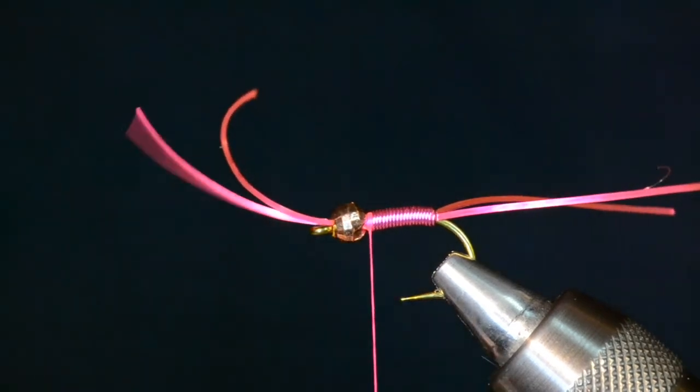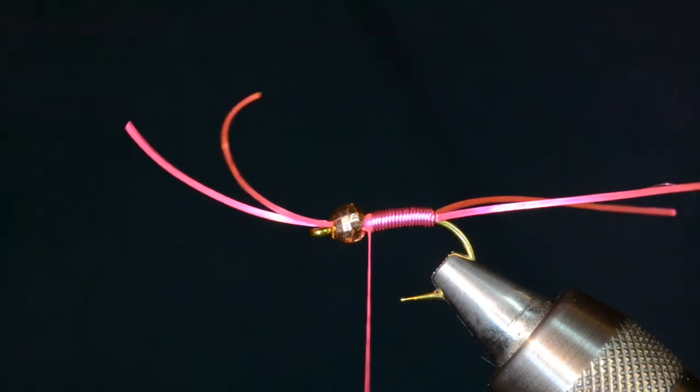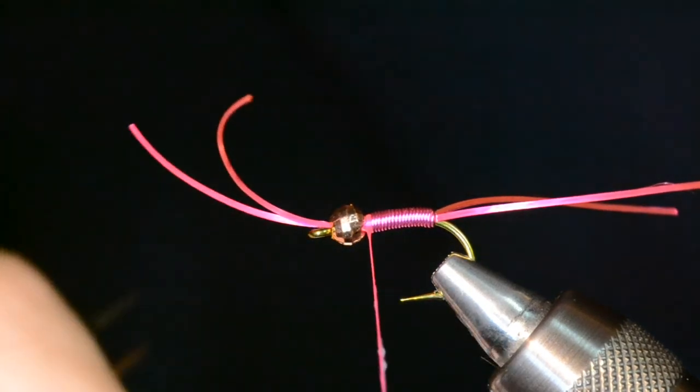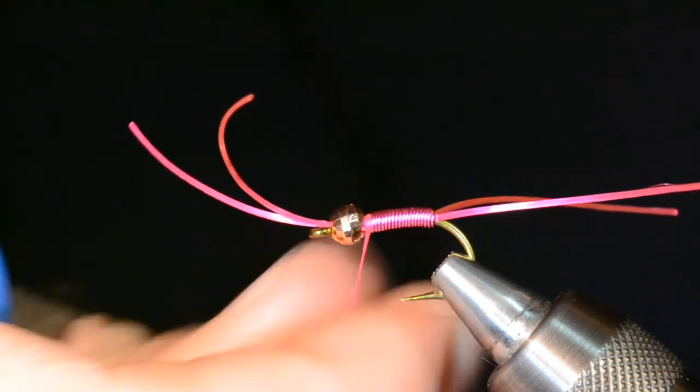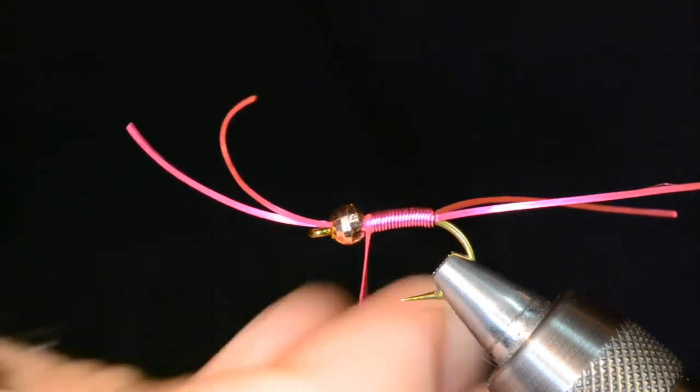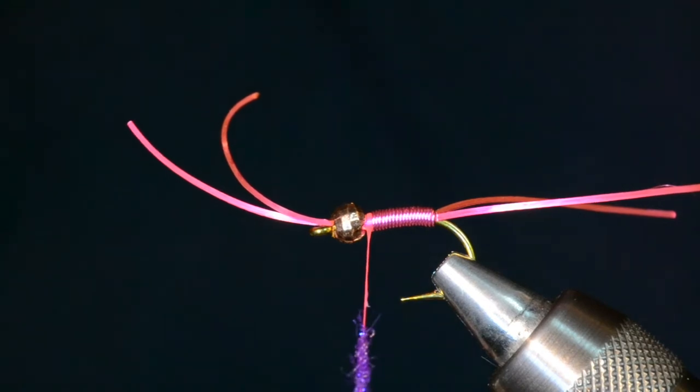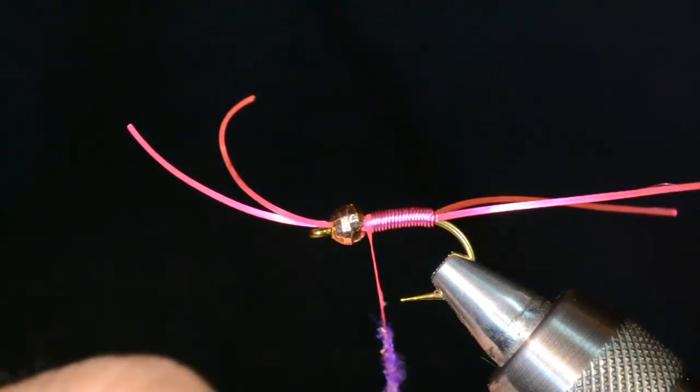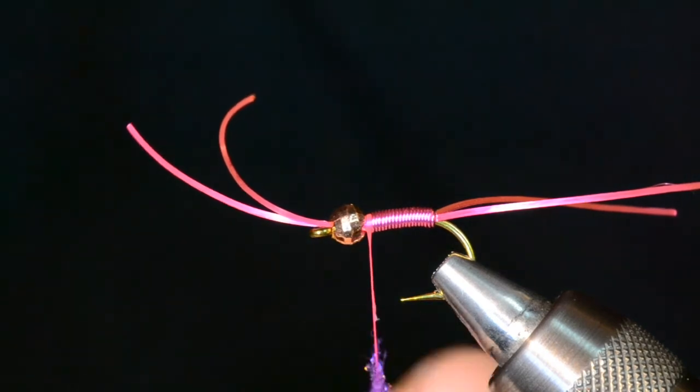Last little step here is this purple ice dub. I like this stuff for this fly. A little purple on the hot pink fly gives a nice contrast, just a little collar there to kind of finish the fly off. Less is more with dubbing in my opinion. If you do a little bit longer, thinner rope of dubbing, it makes life easier to kind of control it and get a little bit more uniform body.